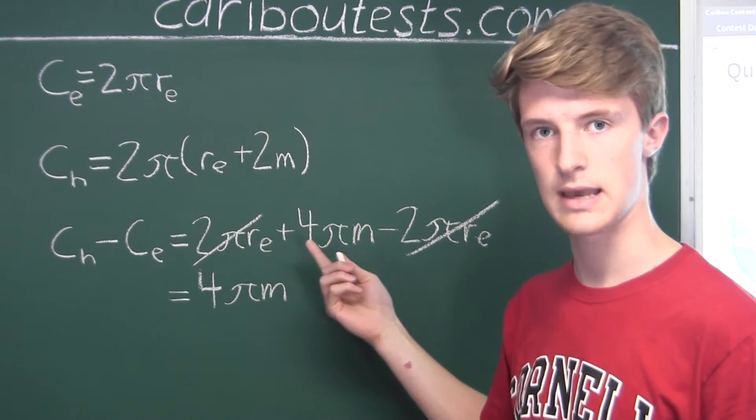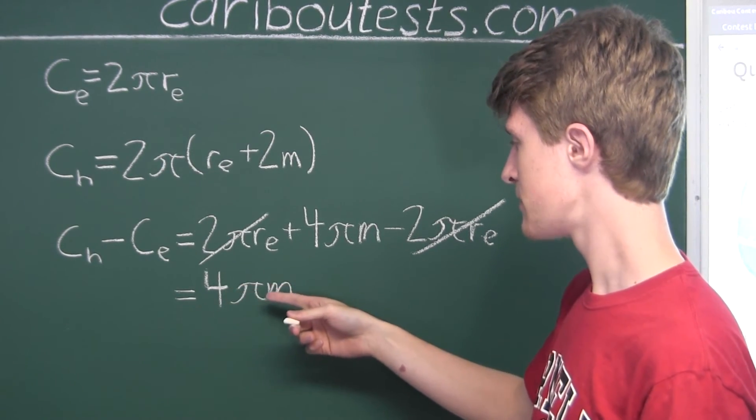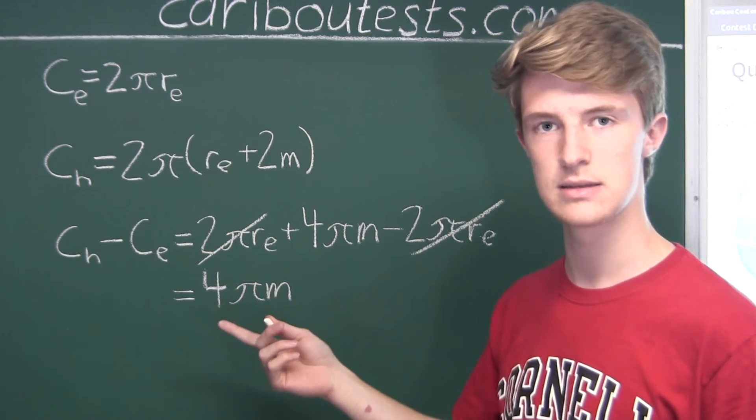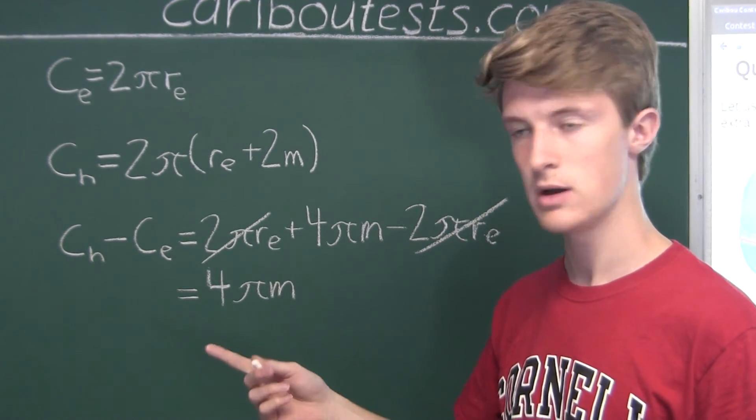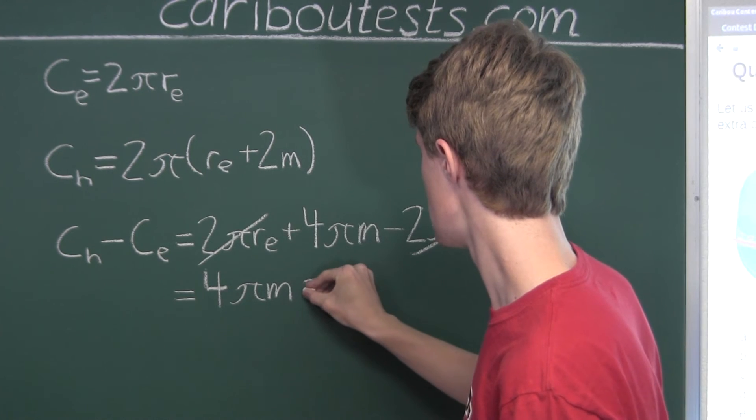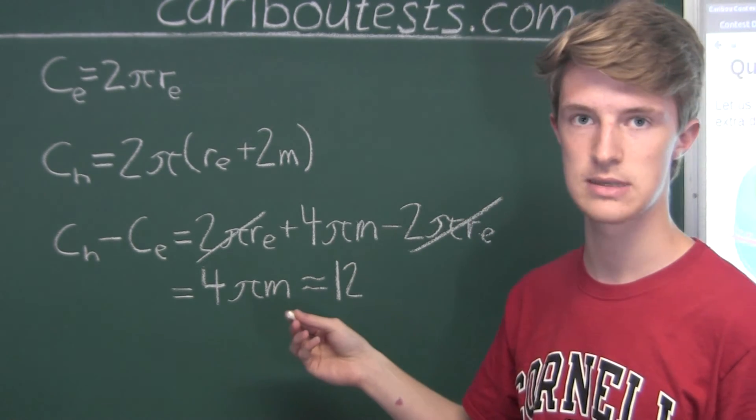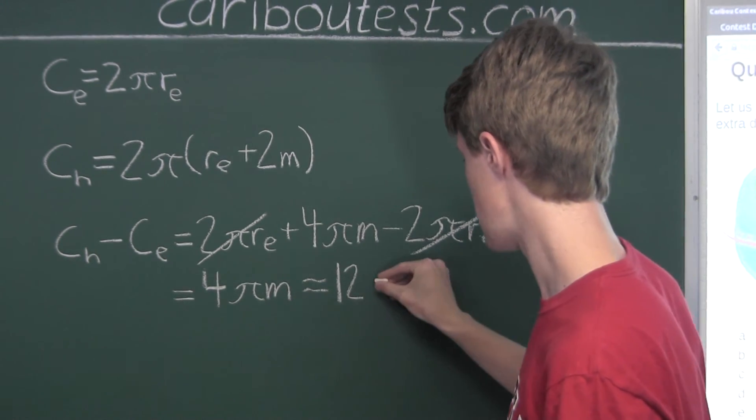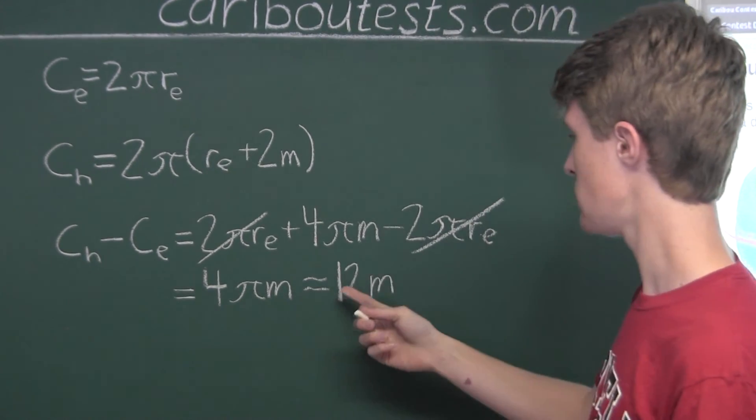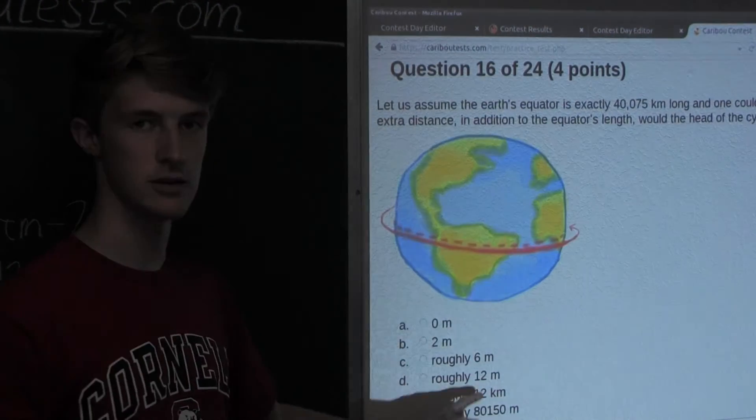So this extra distance that the head travels is 4 pi meters. Pi is around 3.14, so this is roughly 12 meters extra. That is the extra distance the head of the cyclist travels around the world, which is option D, roughly 12 meters.